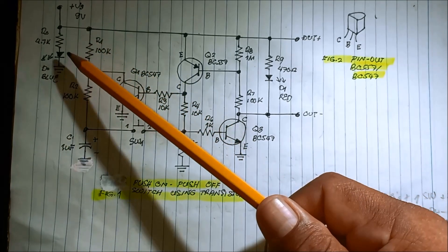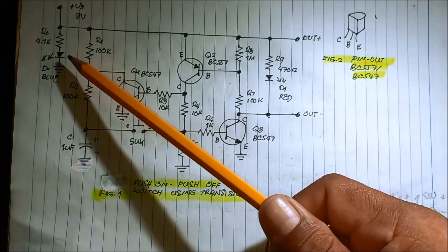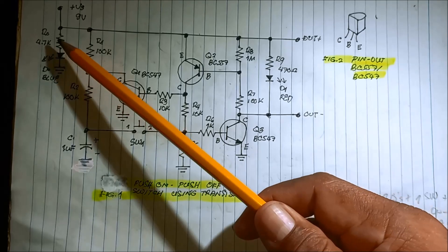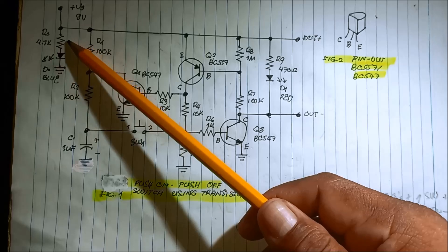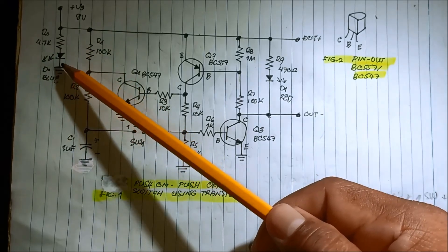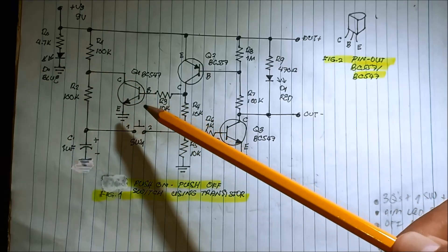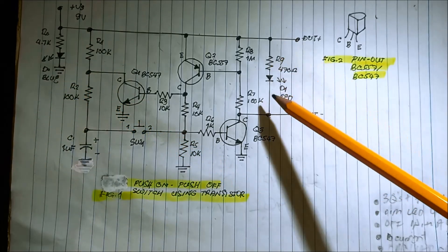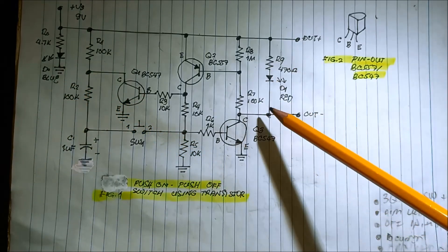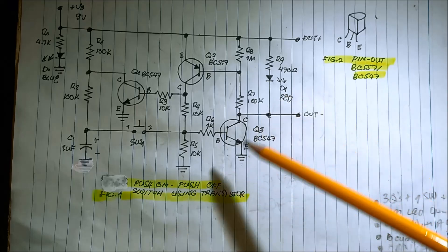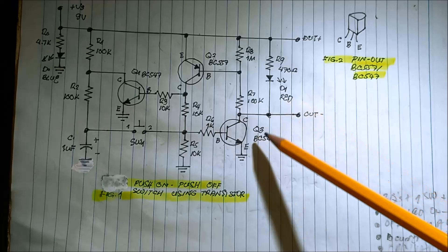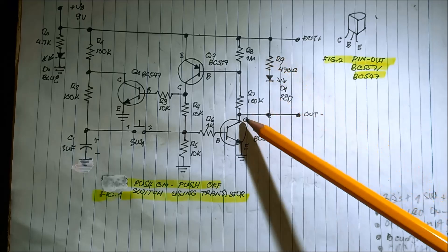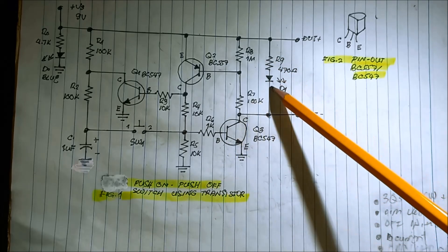We have the power LED, which just shows that the circuit is on. For the power LED we have a 4.7k resistor in series with the blue LED to indicate that the circuit has power. We also have the output LED — our main objective is to turn this red output LED on and off, with a series resistor connected to the collector of the transistor.